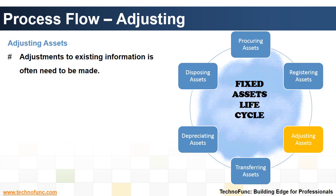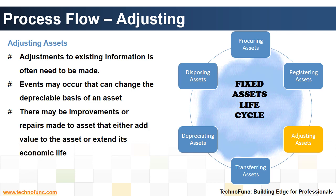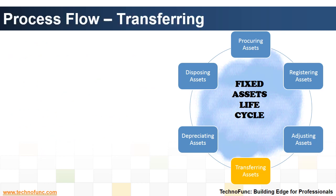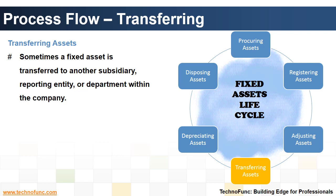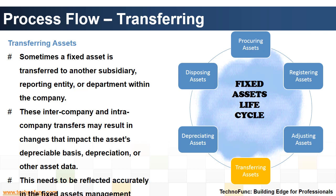Some information will flow automatically based on the asset type selected, based on the relationships defined in the system. Step 3 is adjusting the assets — adjustments to existing asset information often need to be made. Events may occur that can change the depreciable basis of an asset. There may be improvements or repairs made to an asset that either add value to the asset or extend its economic life. Step 4 is transferring the assets — sometimes a fixed asset is transferred to another subsidiary, reporting entity, or department within the company. These inter-company and intra-company transfers may result in changes that impact the asset's depreciable basis, depreciation, or other asset data. This needs to be reflected accurately in the fixed assets management system.